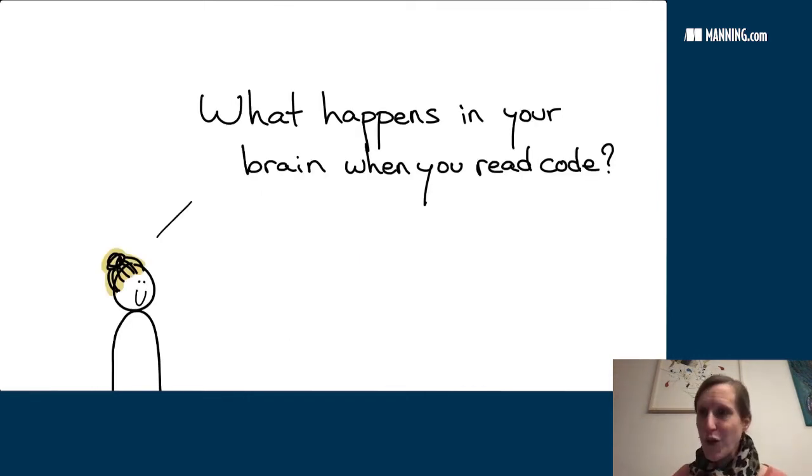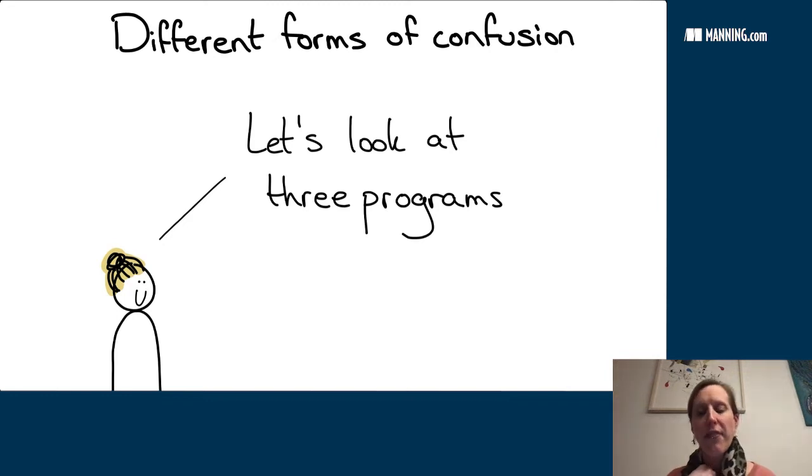So now let's circle back to programming because it sort of turned into an introductory cognitive science lecture which is also interesting I guess. But I know most of you came here to listen to know about getting better at reading code. What happens in your brain when you read code. So let's look at three different programs. Because with the different forms of memory, short-term memory, long-term memory and working memory come different processes related to code. Different reasons why code can be confusing.